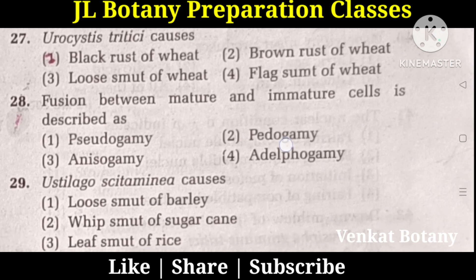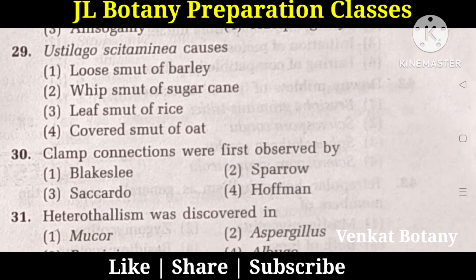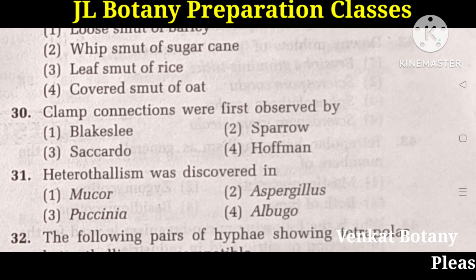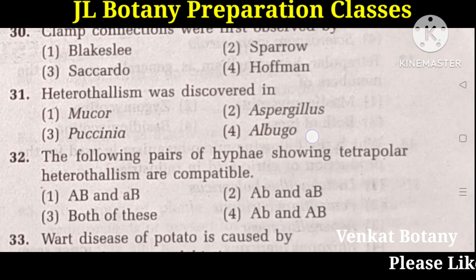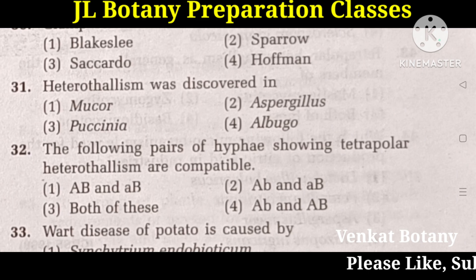Ustilago cytamine causes Whip smut of sugarcane. Clamp connections were first observed by Hoffman. Heterothalism was discovered in Mucor. The following pairs of hyphae showing tetrapolar heterothalism are compatible: Capital A small b, and small a capital B.